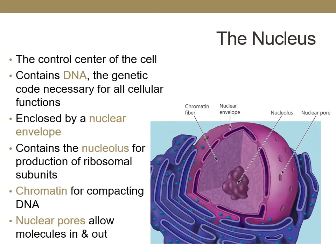The nucleus is the control center of the cell that houses the DNA, which is the genetic information necessary for all cellular functions. The nucleus also contains the nucleolus, which is important for production of the ribosome. Chromatin fibers are present to help the cell compact DNA to prepare for cell division. The nucleus is enclosed by a nuclear envelope that has pores to allow transport of molecules in and out of the nucleus.